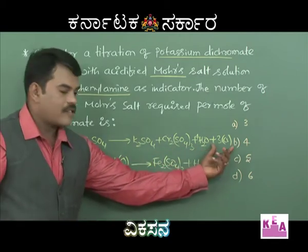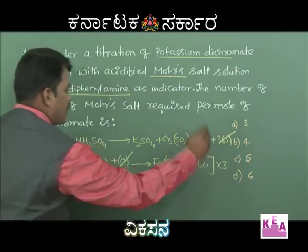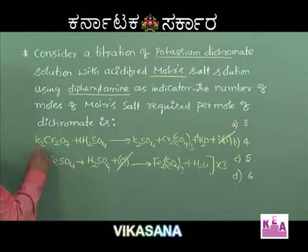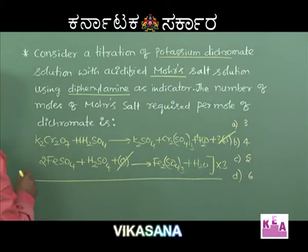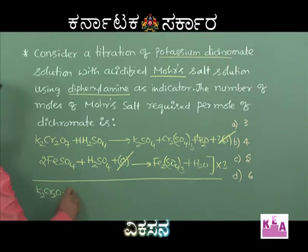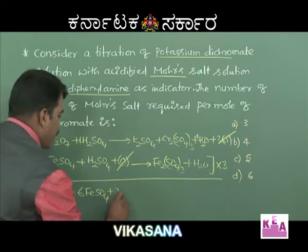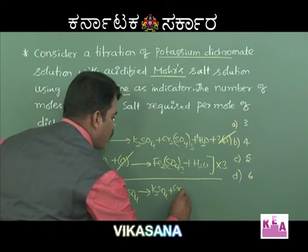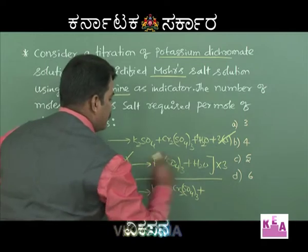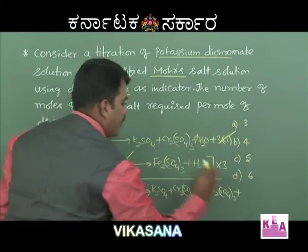This equation is to be multiplied by 3. Cancelling the 3 nascent oxygen and balancing the equation — 2FeSO₄ because there are 2 iron atoms, and this is 3 sulfate. Summing up the overall equation: K₂Cr₂O₇ plus 6FeSO₄ plus 7H₂SO₄ gives K₂SO₄ plus Cr₂(SO₄)₃ plus 3Fe₂(SO₄)₃ plus 7H₂O.